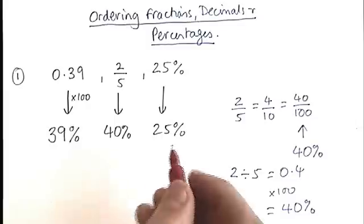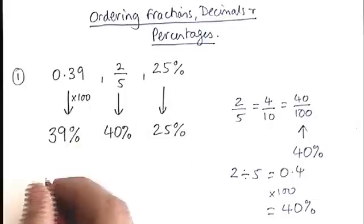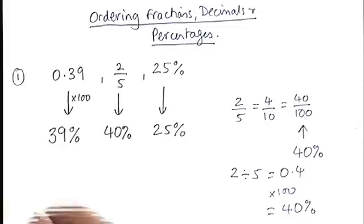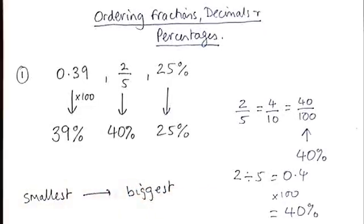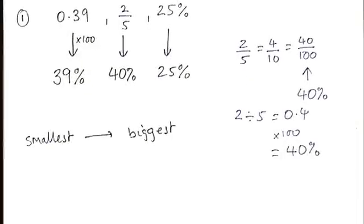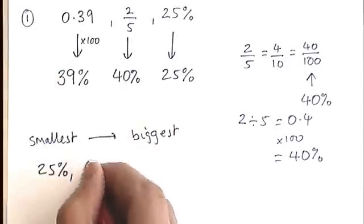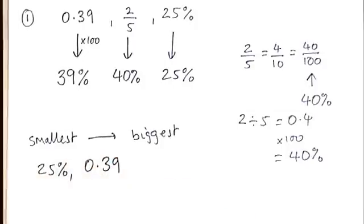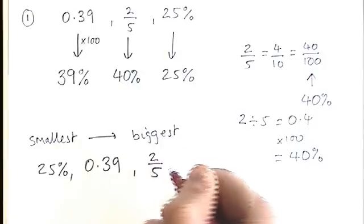Now what you need to do is decide which is the smallest and which is the biggest. Let's imagine that the question asks us to go smallest to biggest. The smallest here is obviously 25%. The next one is 39%, which I'm going to write back in its original format.